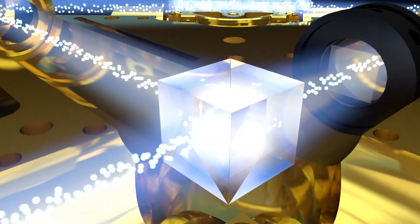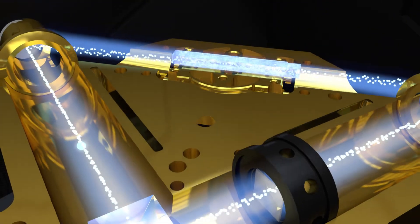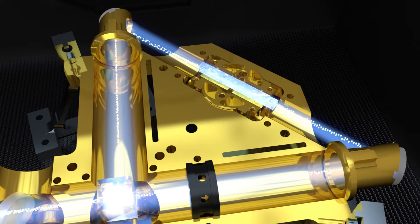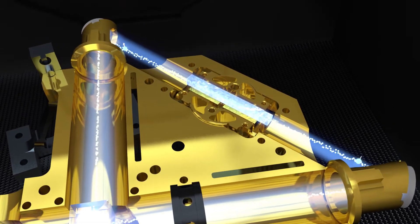Entangled photon pairs can be created using a technique called spontaneous parametric downconversion. This requires a non-linear crystal and a coherent laser beam.